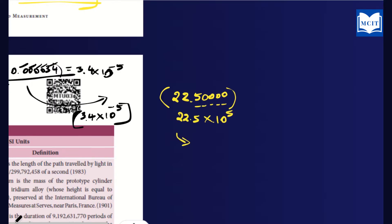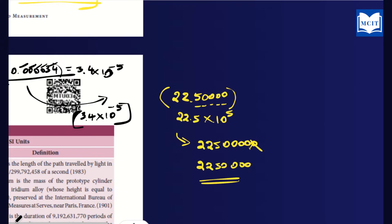The number is easy to convert. So using powers of 10, we can represent large values like 22,50,000 as 22.5×10⁵. The same applies to negative powers for small values and positive powers for large values.